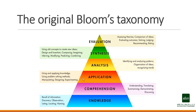The third level of the original Bloom's Taxonomy is application — using and applying knowledge after understanding and demonstrating it. Then you move to identifying different patterns and organizations of ideas, converting old ideas into new ones, and comparing ideas to create something yourself. So the original Bloom's Taxonomy had six levels: knowledge, comprehension, application, analysis, synthesis, and evaluation.